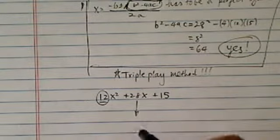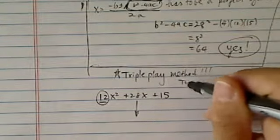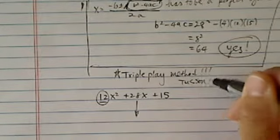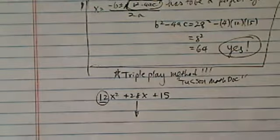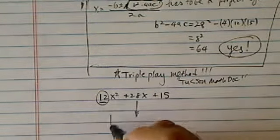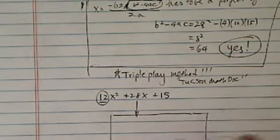The problem with factoring this one is this darn coefficient, it's not one, it makes it really difficult. So this triple play method, go on to the channel, it's Tucson MathDoc channel, you can look it up, just search for it. Anyway, back over here, what we're going to do is we're going to trick the system.